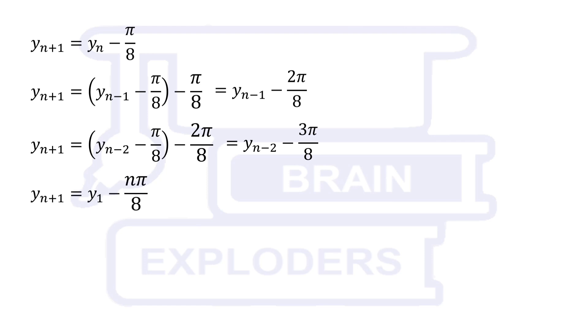In this way, yn plus 1 is equal to y1 minus n pi by 8, because in the right-hand side, every time the sum of subscript of y and coefficient of minus pi by 8 is equal to n plus 1.